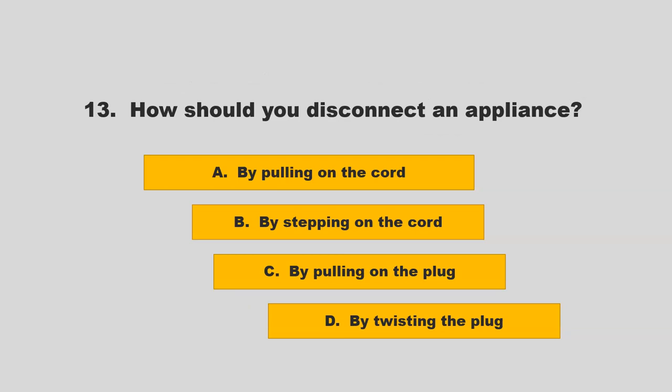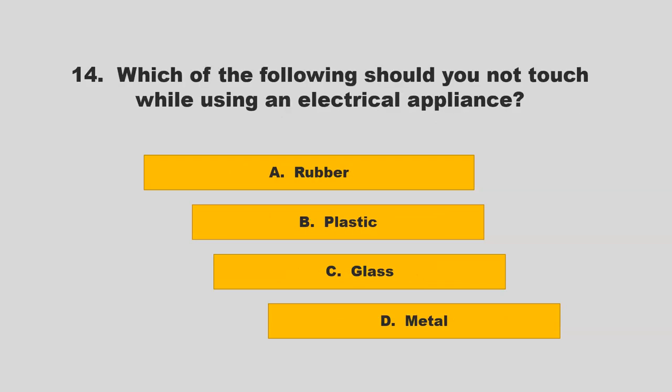How should you disconnect an appliance? Is it by pulling on the cord, by stepping on the cord, by pulling on the plug, or by twisting the plug? If you chose C, by pulling on the plug, you are correct.